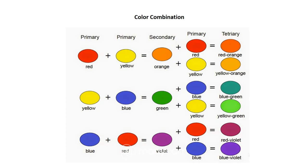We have primary colors: red, yellow, blue. To get the secondary colors, we have to mix two primary colors. Red plus yellow equals orange. Yellow plus blue equals green. Blue plus red equals violet.